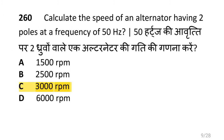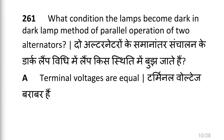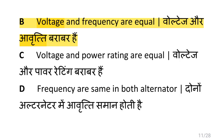Calculate the speed of an alternator having 2 poles at a frequency of 50Hz, i.e. 3000 RPM. What condition causes the lamps to become dark in the dark lamp method of parallel operation of two alternators, i.e. voltage and frequency are equal?